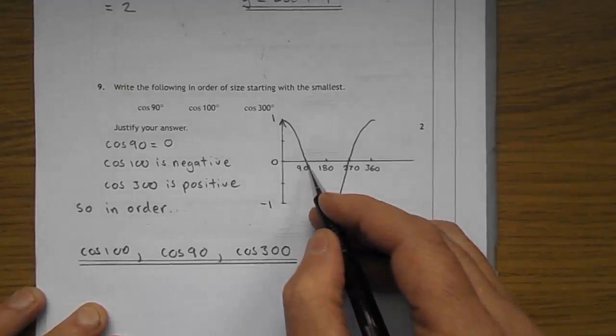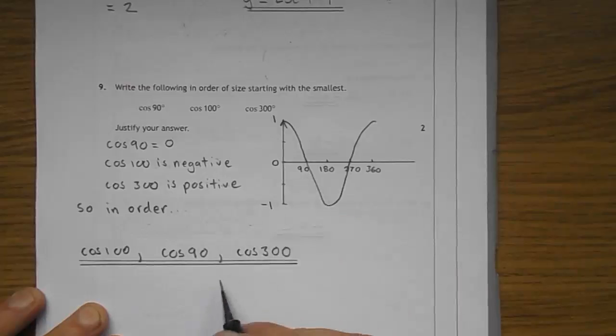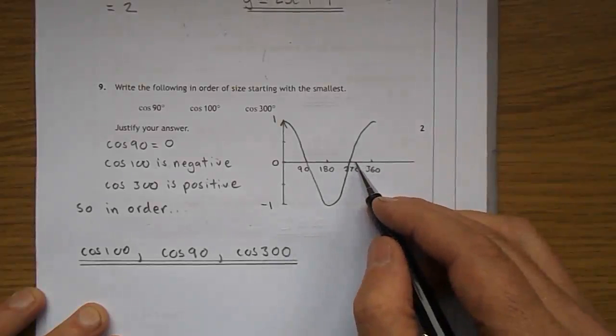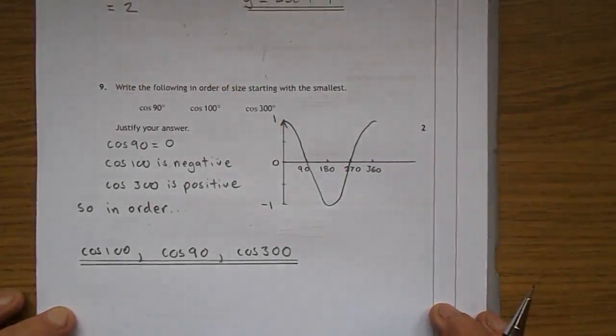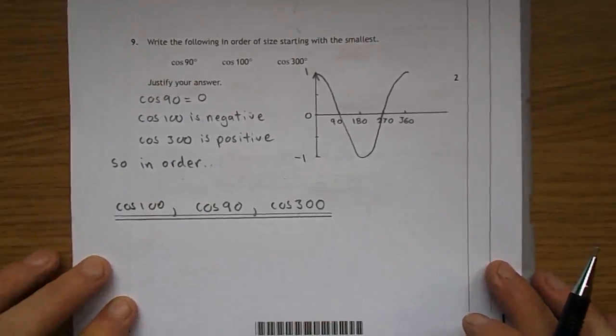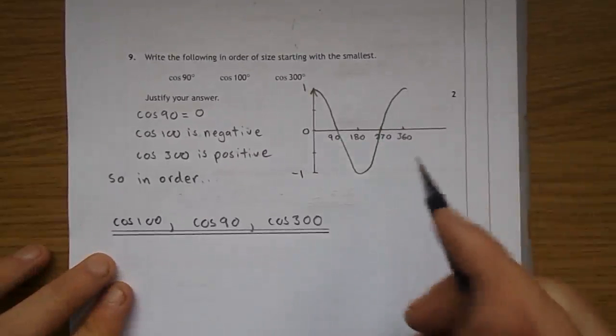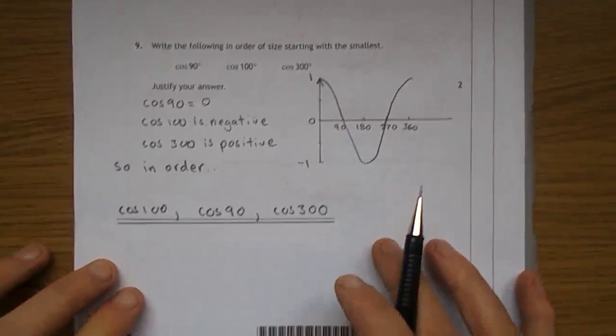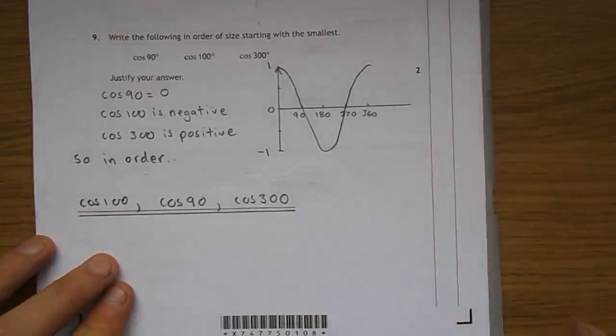Cosine of 90 is 0. The cosine of 100, whatever it is, is going to be negative, and the cosine of 300 is going to be positive. We don't know the values but we can at least put them in order. So in order, they want the smallest first: that would be the negative one, cosine of 100, then cosine of 90 which is 0, and then cosine of 300 would be the biggest.